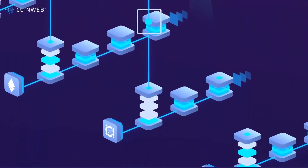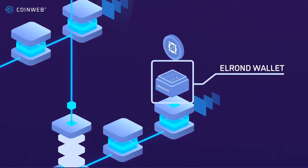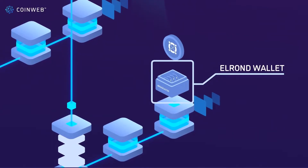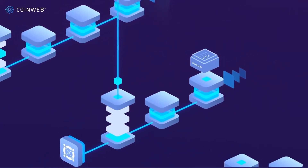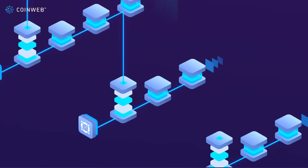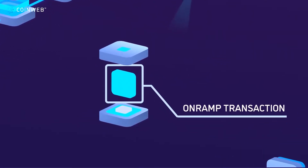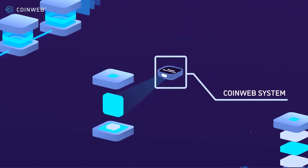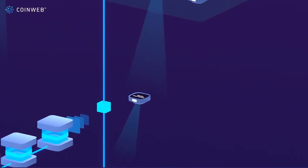The CoinWeb broadcaster advances the e-gold for OnRamp's transaction from its Elrond wallet, which always holds sufficient e-gold to process any Elrond transaction. Once the transaction is verified by Elrond's nodes, it is immutably stored into the Elrond chain and appears in the next block, represented by the blue transaction. The blue transaction will be recognized by the CoinWeb system, which is constantly monitoring the Elrond chain.